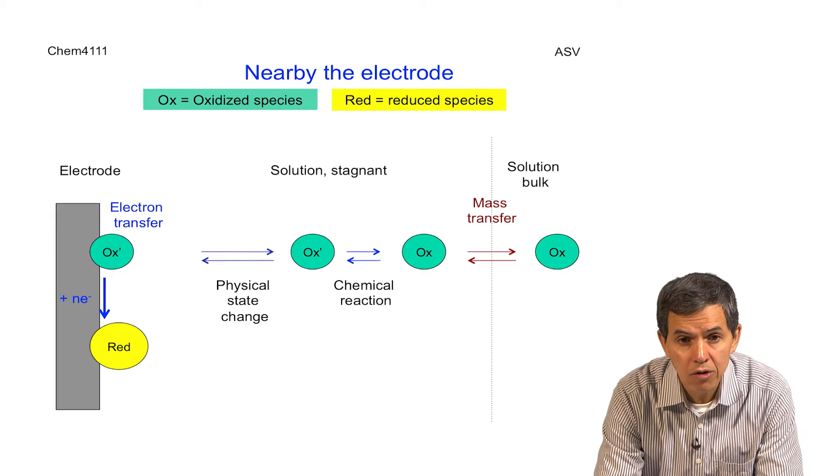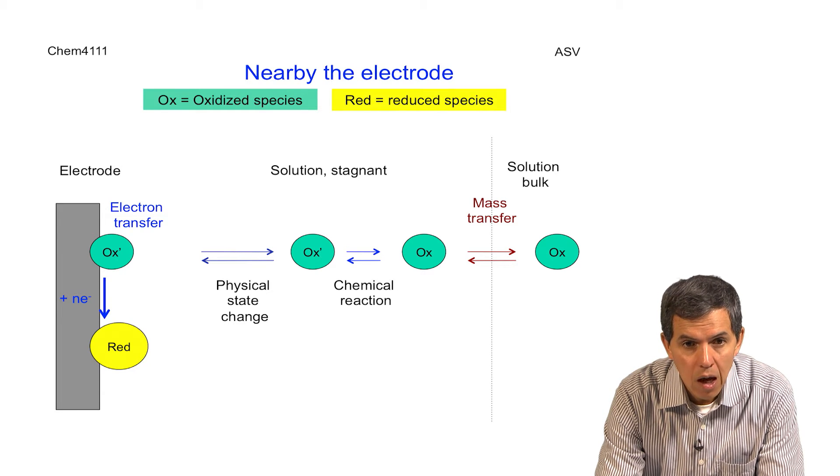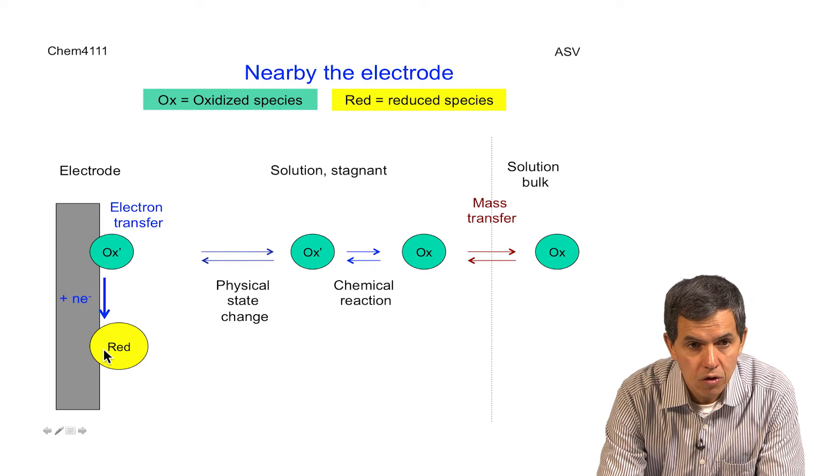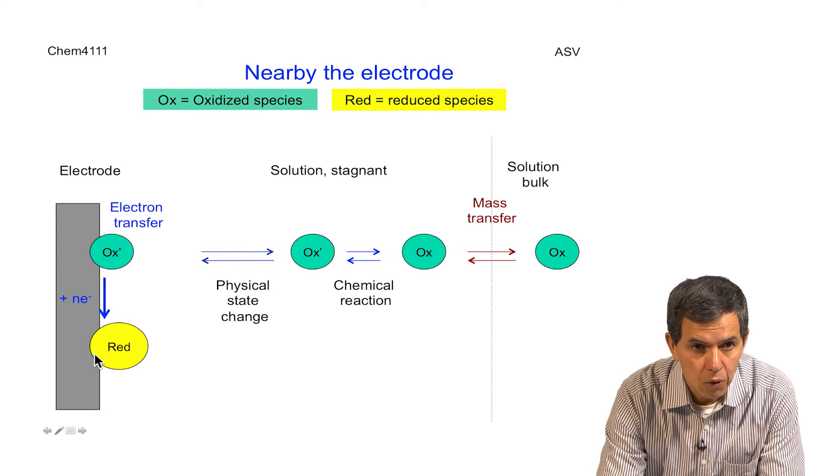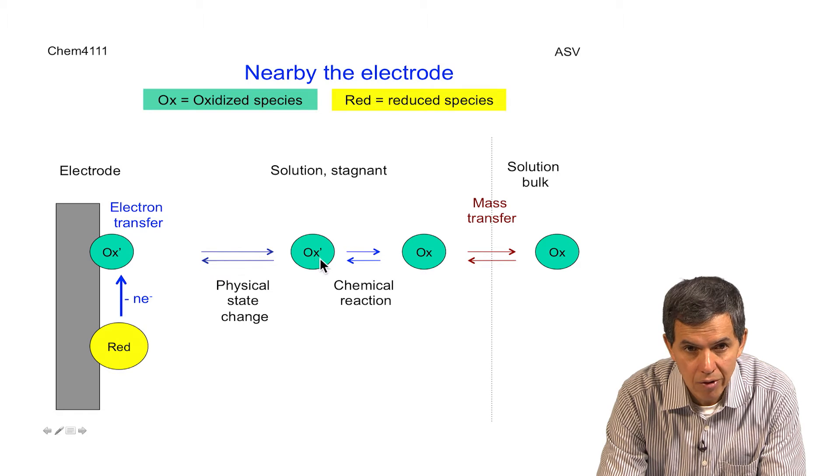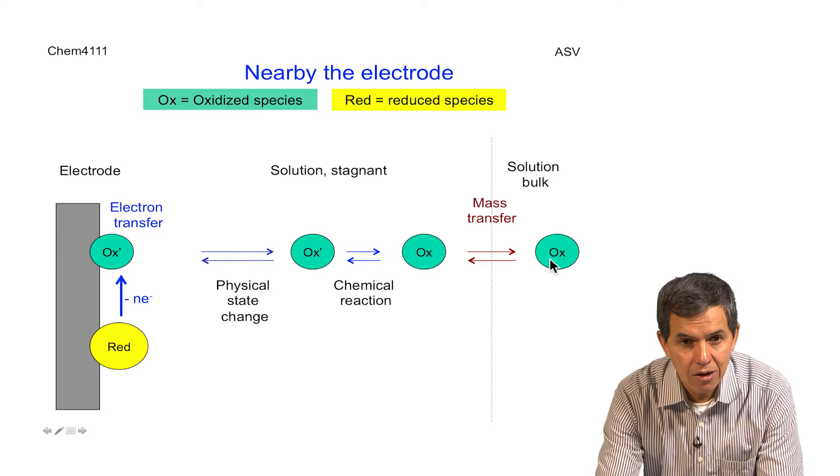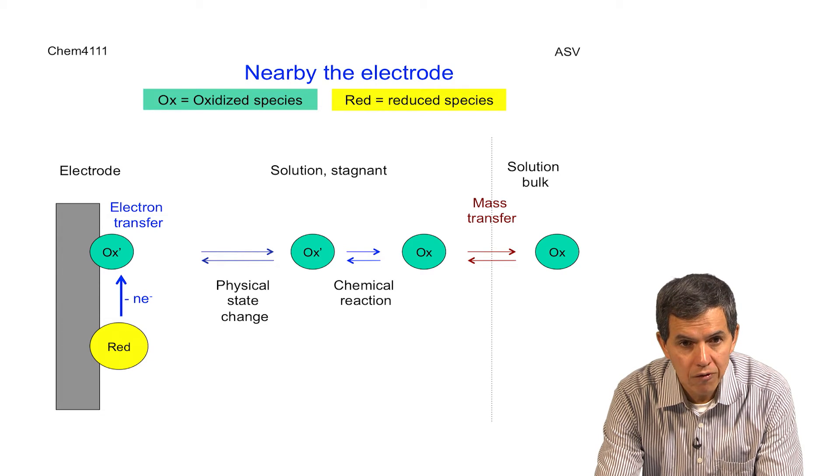This is a very important process during the deposition that happens during ASV. However, when we go to the later stages, which is the removal of the reduced metal from the surface of the electrode, when the voltage is reversed to become more positive, then the opposite process will happen, which is the oxidation of the reduced species to become oxidized, and then the process will happen in the opposite direction, releasing the oxidized species. So what we will be doing in the next slides is to illustrate in more detail what happens in each of these different processes.